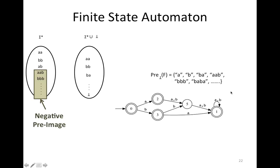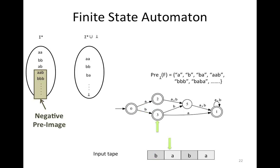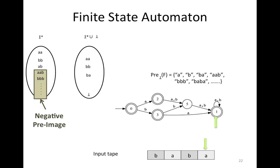Let's take, for example, a long string like 'baba'. Starting from state 0, we read 'b' and move to state 3. Then we read 'a' and move to state 1. Then we read 'b' and stay in state 1. Then we read 'a' and still stay in state 1. We finished reading the input and are in an accepting state — so this input string is an element in the set represented by this automata.